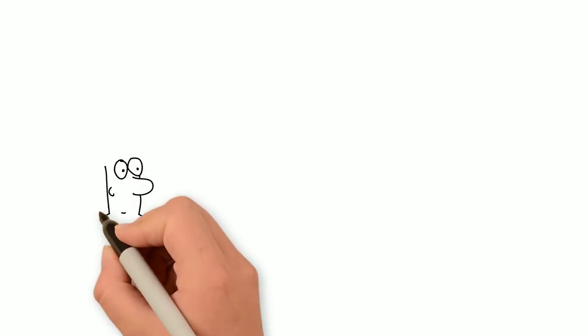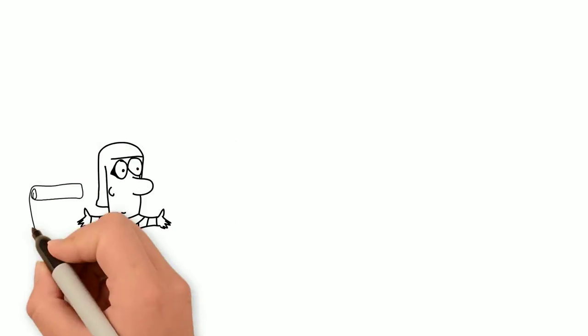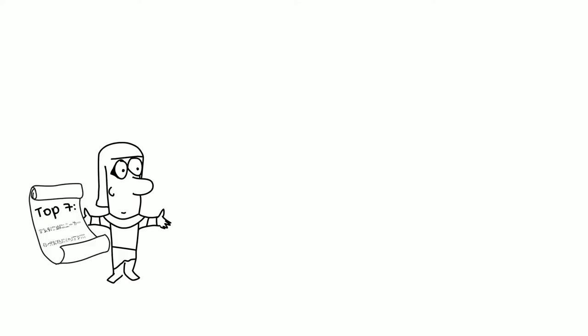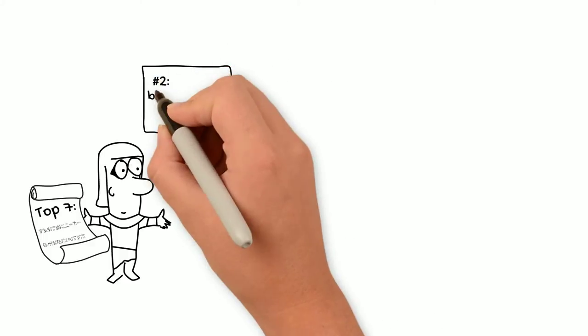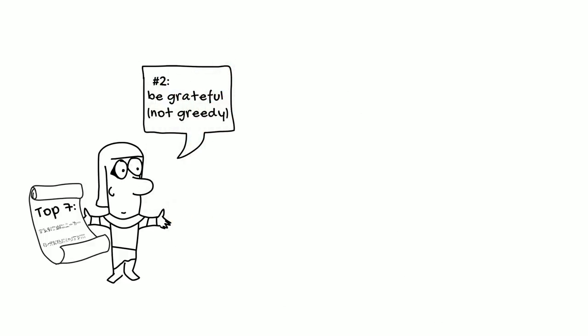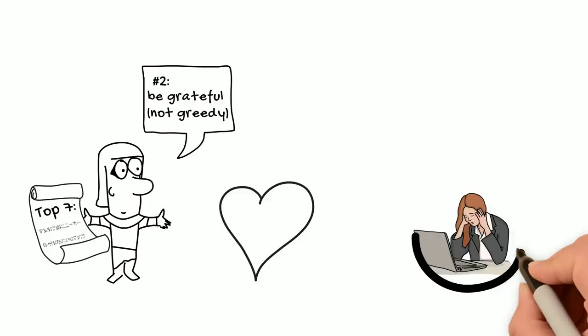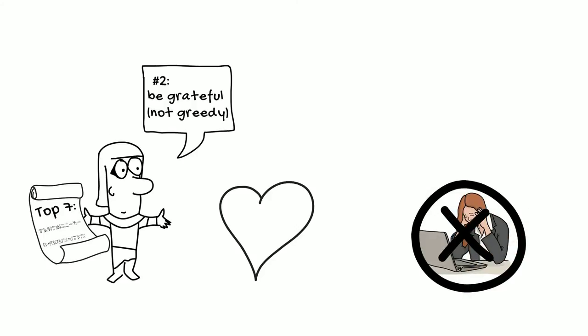The second resolution on our list is to be more grateful for what you have and not be greedy and try to accumulate more. This is another one that shows up a lot in wisdom literature, particularly in the maxims of Ptahhotep. At the beginning of his instructions, Ptahhotep advises: Follow your heart as long as you live. Do no more than is required. Don't waste time on daily cares beyond providing for your household. Wealth does no good if one is glum.